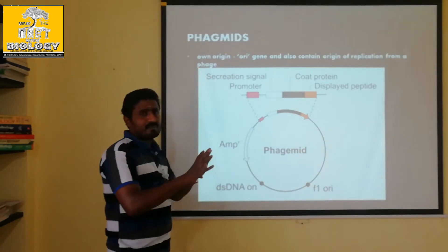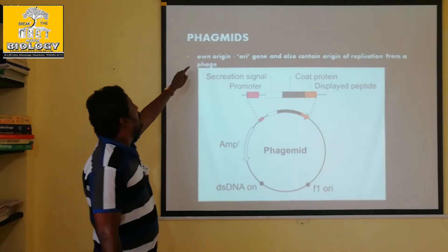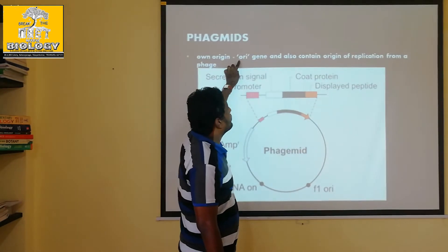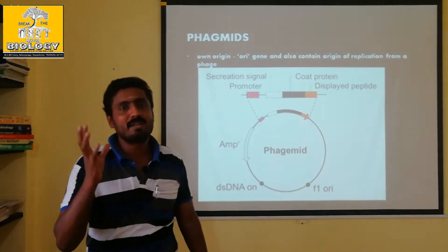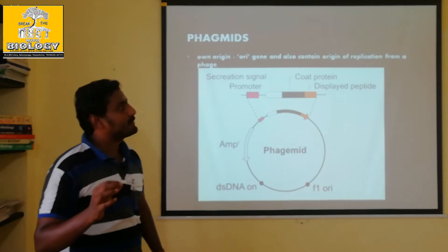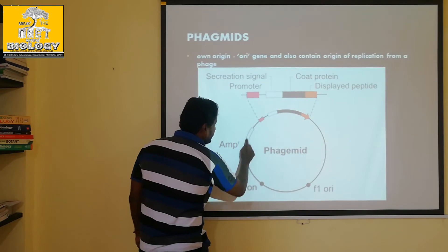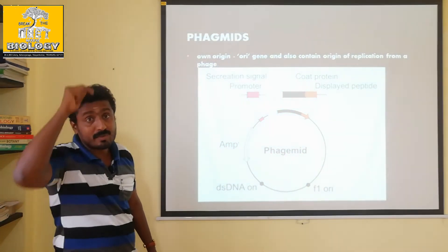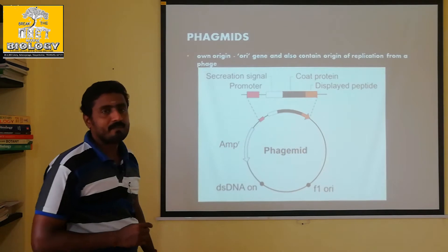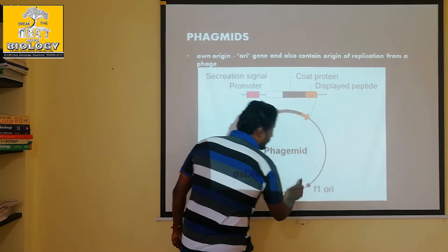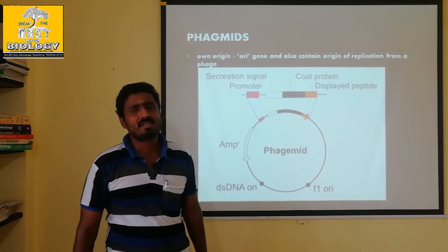First of all, we will be using phage DNA. Phage DNA plus normal bacterial DNA — origin of replication from a phage. Normal plasmid, and the plasmid is coming from the bacterial source. This is ampicillin resistant.